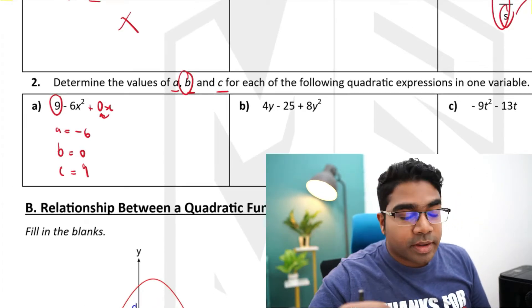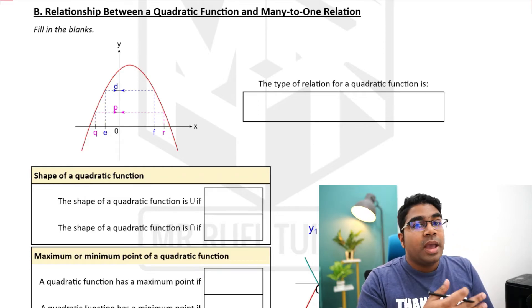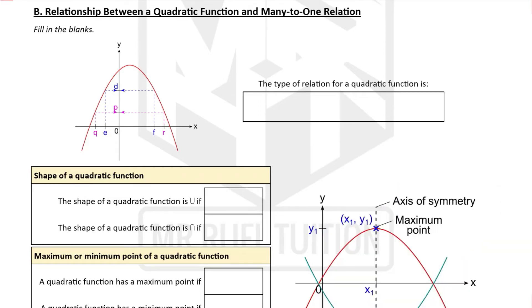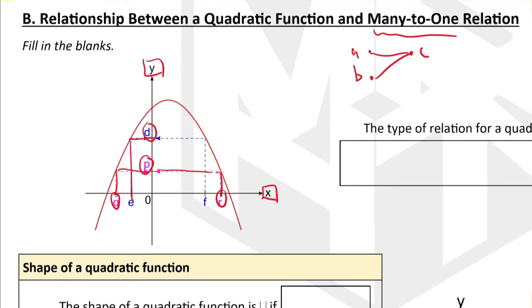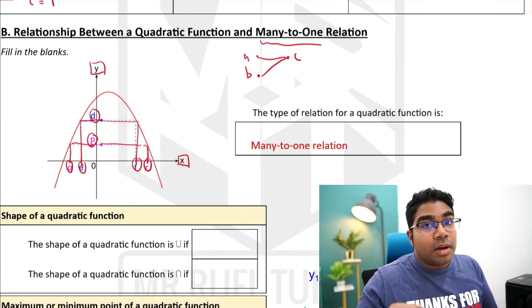Now that we've reviewed what a quadratic expression is, let's look at the relationship between a quadratic function and a many-to-one relation. A many-to-one relation means many objects have one image — more than one object maps to one image. The objects are the x values and the images are the y values. For a quadratic curve with its parabolic shape, for any image point P, you can see two objects Q and R. Therefore, a quadratic curve is indeed a many-to-one relation.